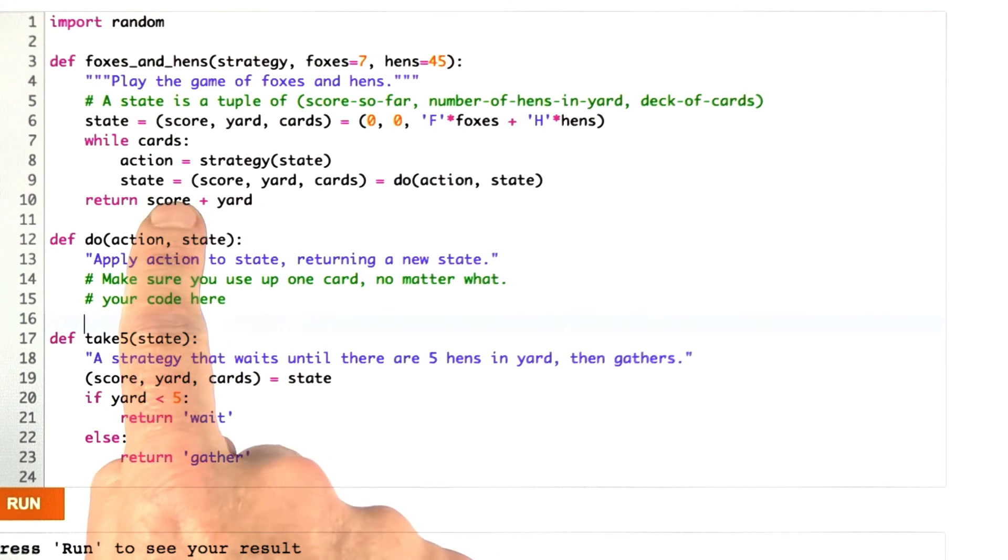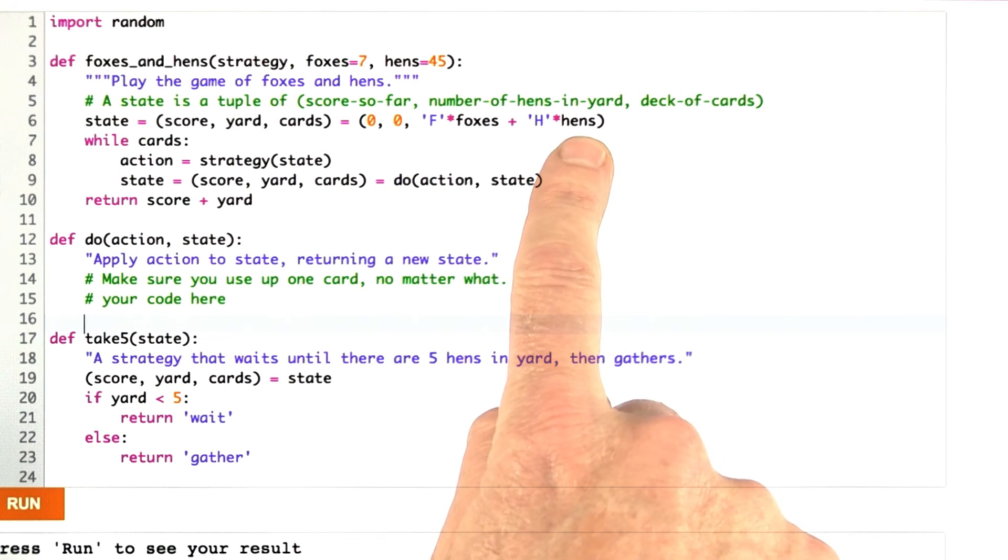So your score should be the score you've accumulated so far plus whatever is in the yard. So I want you to write this do function. Remember that there are only two actions, gather and wait, so do has to apply those. It has to pick a random card out of the cards, figure out what to do with that according to the action, and then return the new score and yard and the set of cards without that card, the set of cards with that card removed. And the cards have to be represented as a string rather than as a Python set.